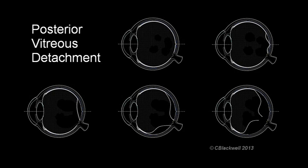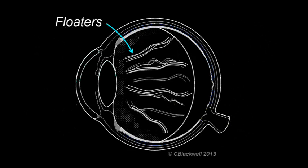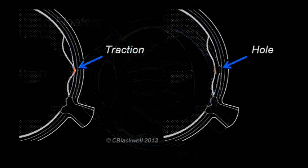These two changes within the vitreous cause one set of problems which range from nuisance, like floaters, to significant, like macular hole.